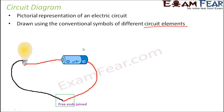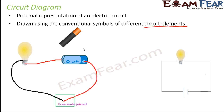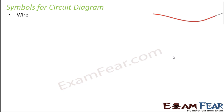When you draw a circuit diagram for the same circuit, this is how it would look. Instead of the battery you use its symbol, instead of the key you use its symbol, and you represent the bulb with its symbol. Now let us quickly look at the symbols used in circuit diagrams and some of the important circuit elements.